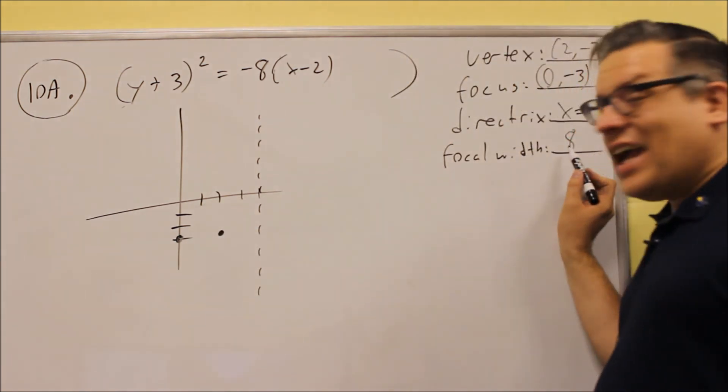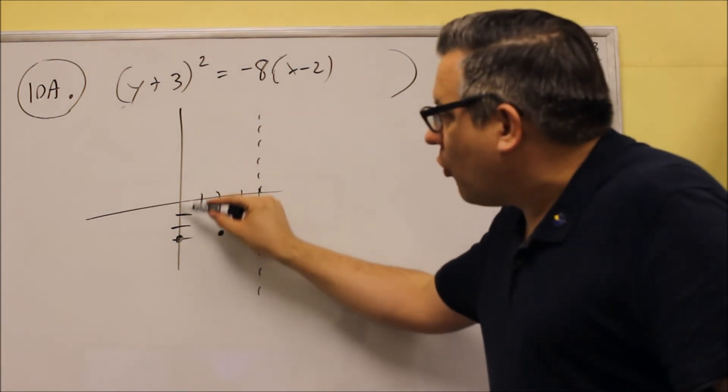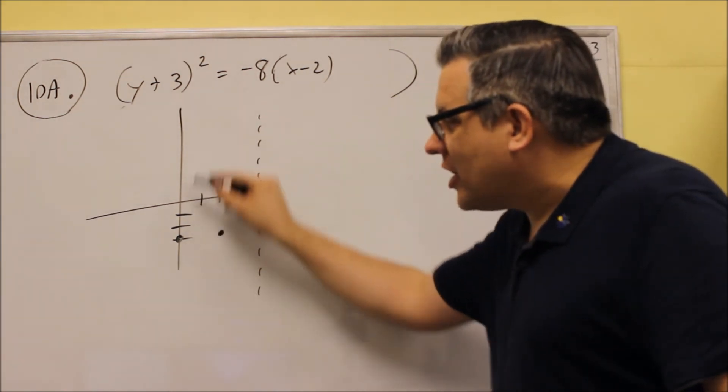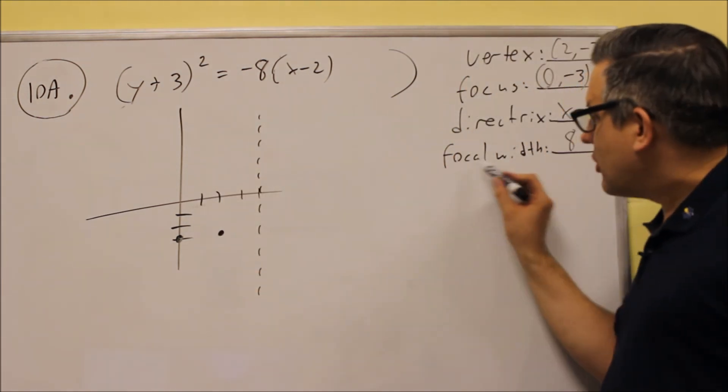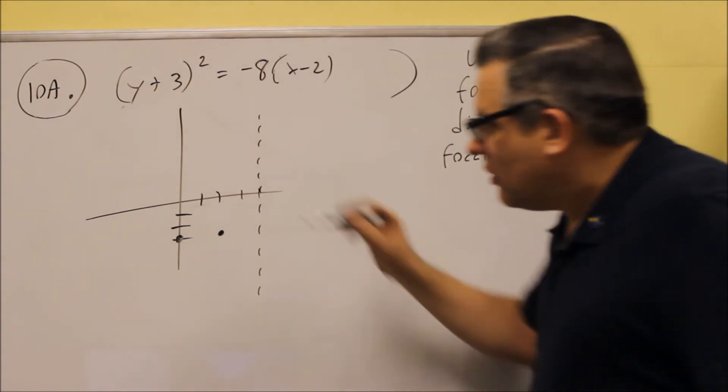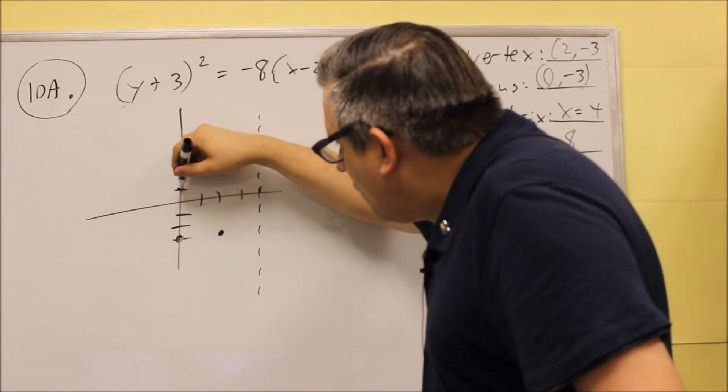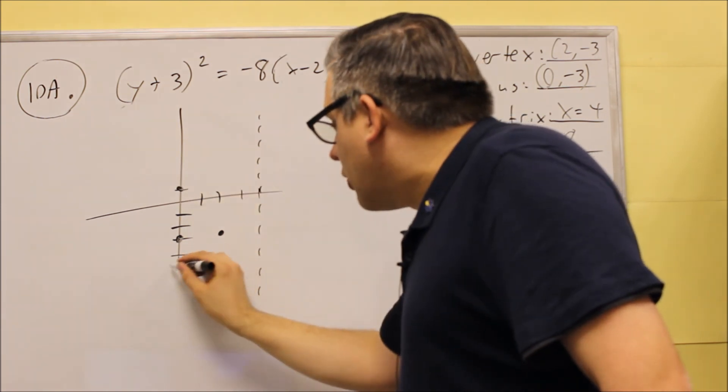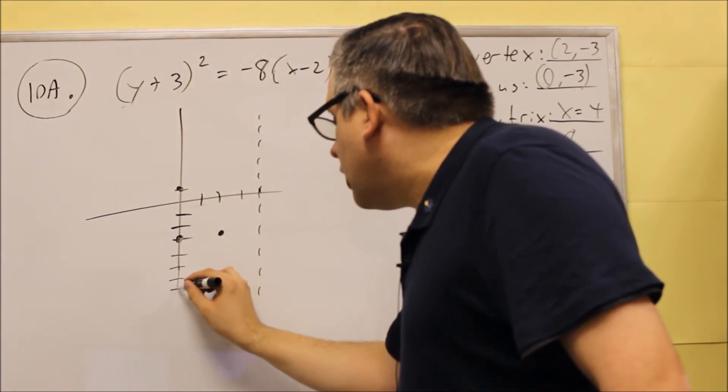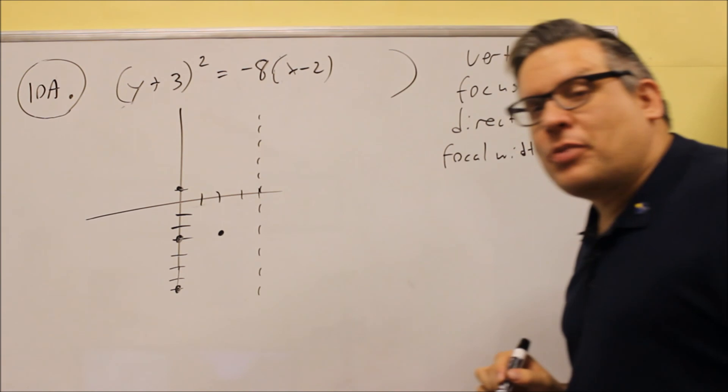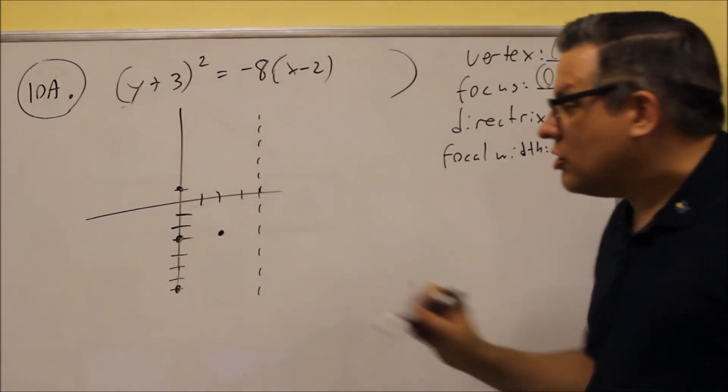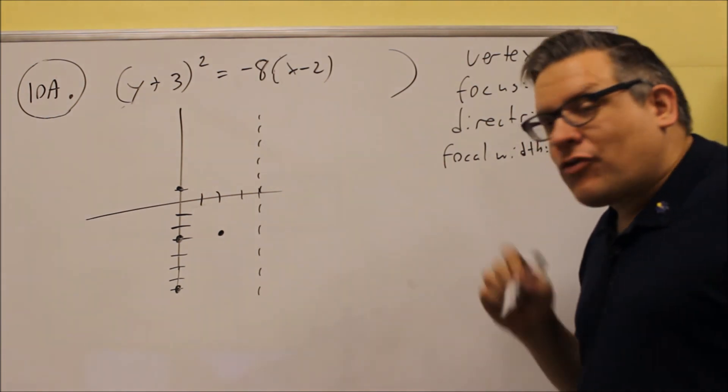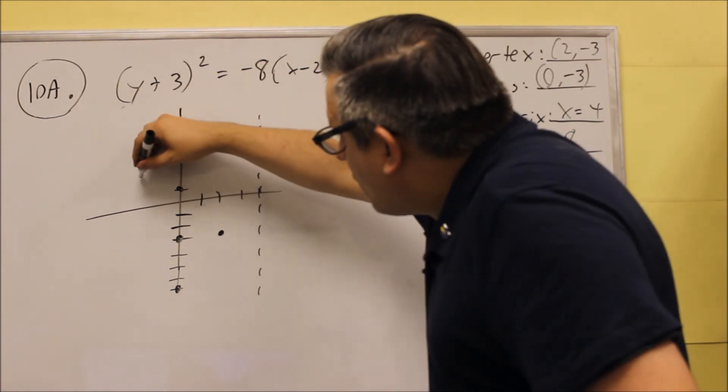So that's basically how wide the parabola is at the focus. That's what it's asking for for focal width. We're going to go up from the focus, we go up 4 and we go down 4. And we need to put these points on the graph because that's going to tell us how wide it is. So you need to make sure that you plot those so that way the graph is more accurate.